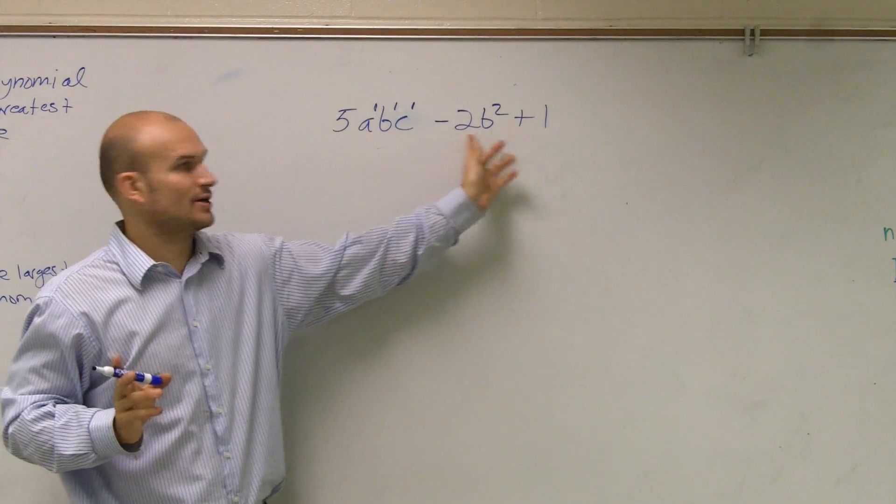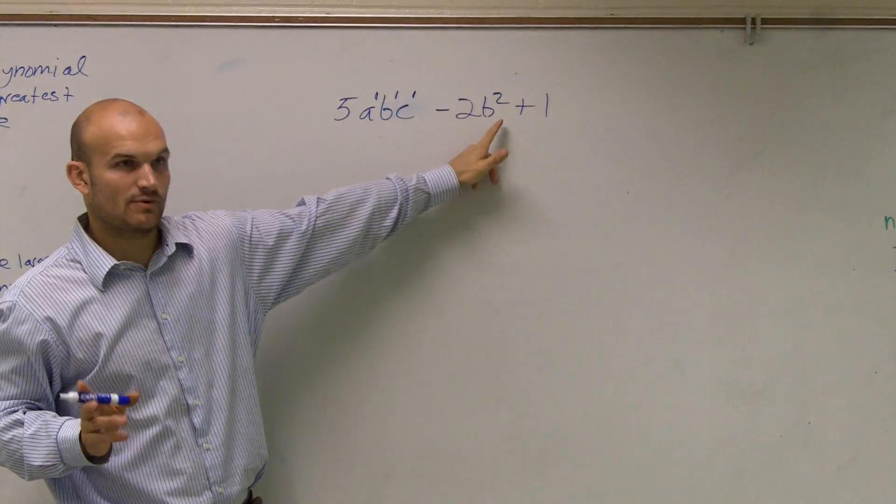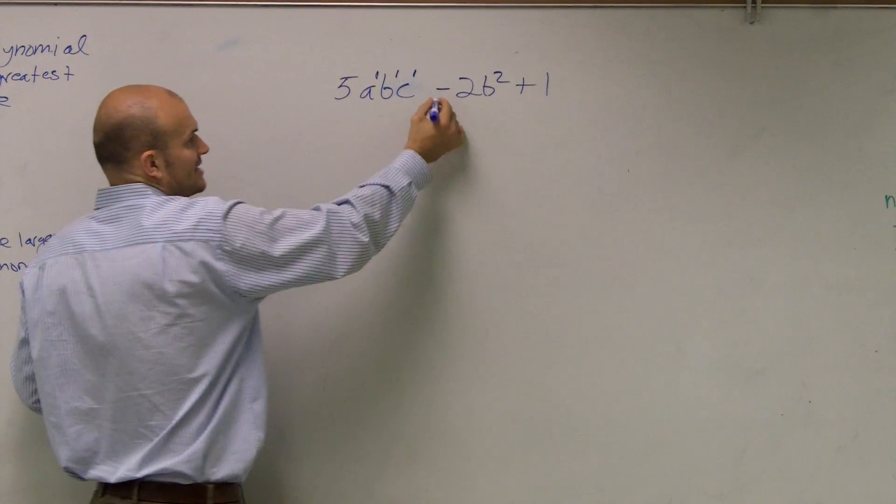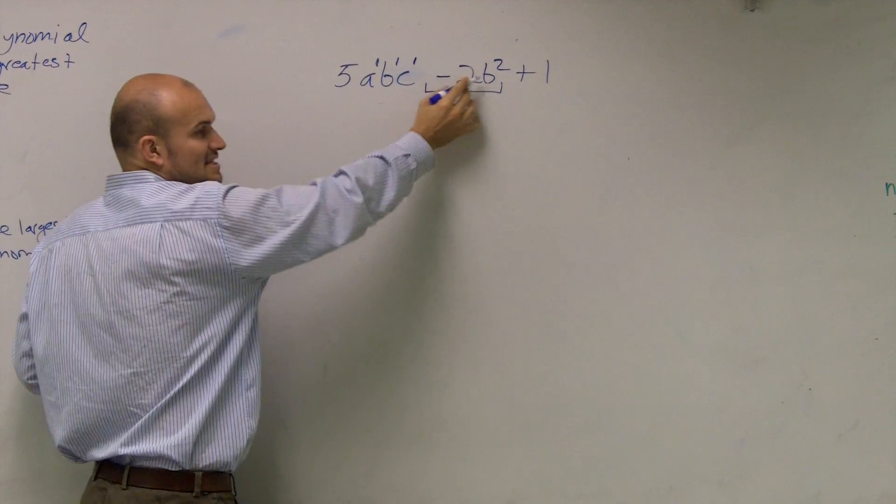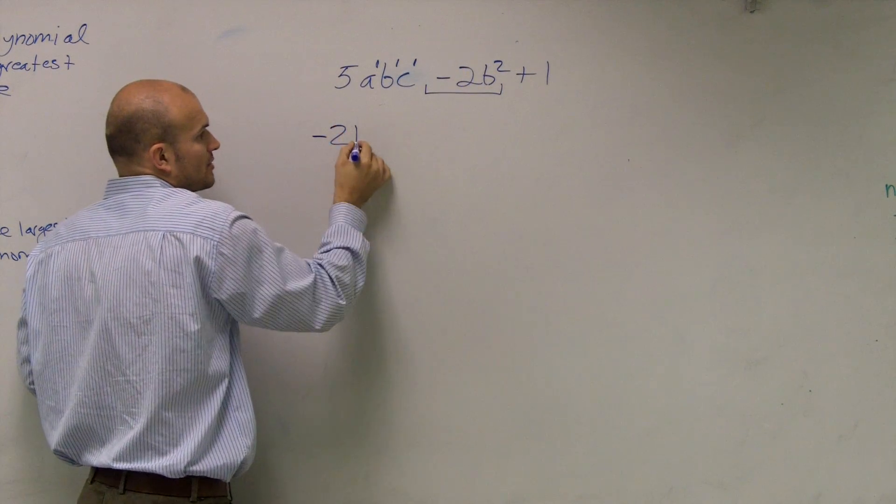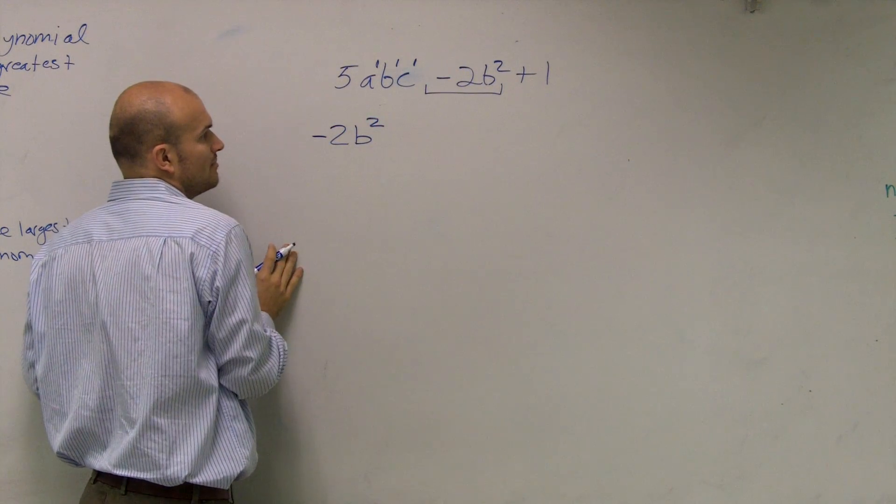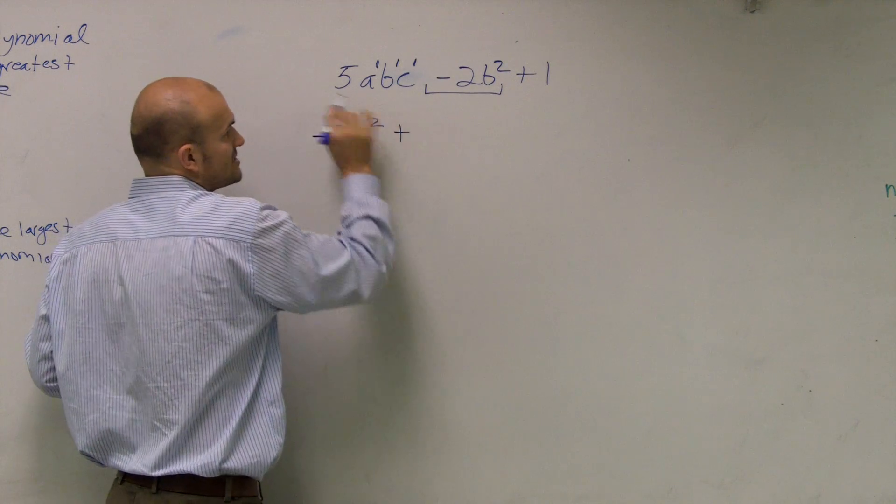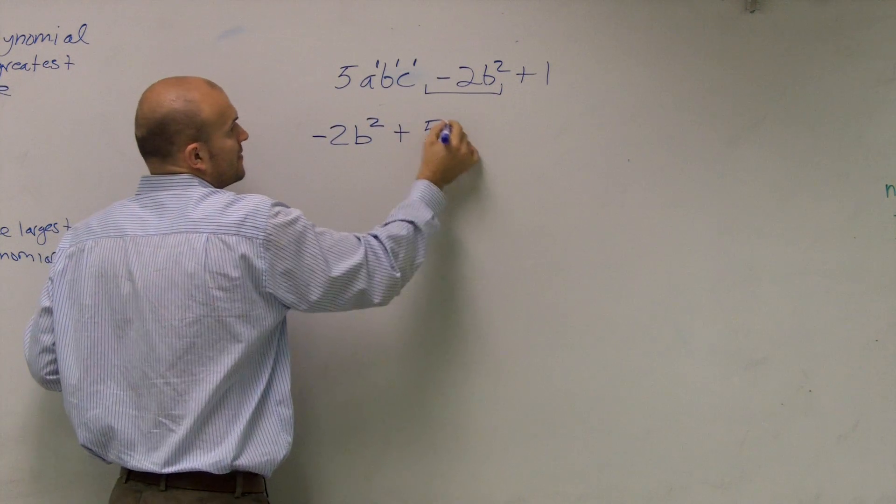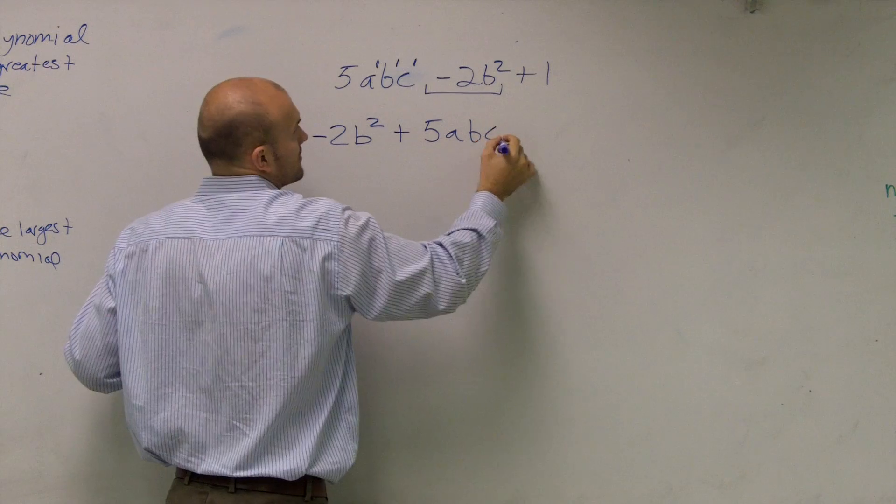So I look up here, what is my largest degree? b squared. So what I'm going to do is I'm going to write this term first, because that's b squared multiplied by negative 2. So I'm going to write negative 2b squared plus, since that's positive, 5abc plus 1.